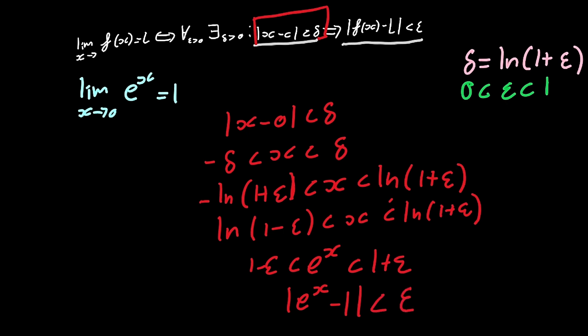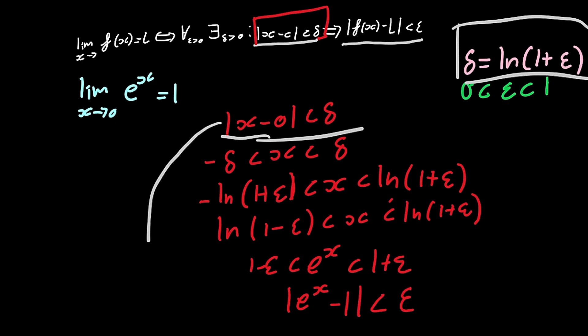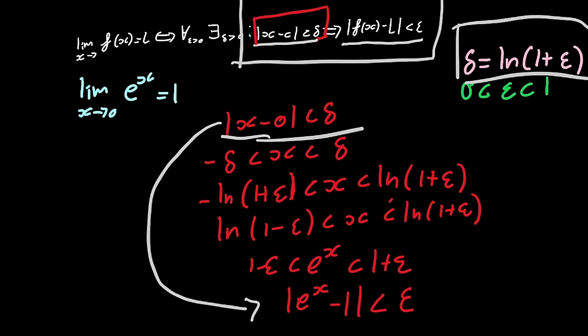So what have we done? We've shown that x minus 0 less than delta — where delta equals ln(1 plus epsilon) — is a sufficient condition to show that the absolute value of e^x minus 1 is less than epsilon, which is what we wanted. We've picked a delta and shown that it exists. For all epsilons in the valid domain we can find a delta, and therefore we've successfully shown that the limit as x approaches 0 of e^x equals 1.